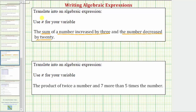Because we have a sum, we know we'll have a plus sign, where the first addend is 'a number increased by three.' The unknown number is represented by the variable x, so we can think of this as x increased by three, which would be x plus three.